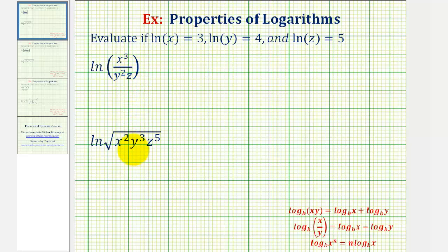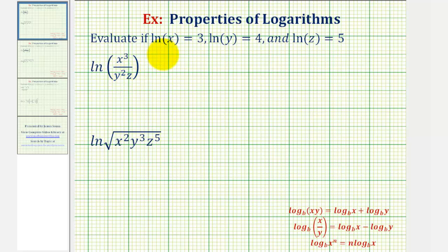We want to evaluate the logarithms given natural log x equals three, natural log y equals four, and natural log z equals five. To evaluate these, we'll expand these logarithms as much as possible using the properties of logarithms and then perform substitution for natural log x, natural log y, and natural log z.